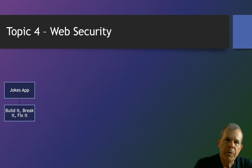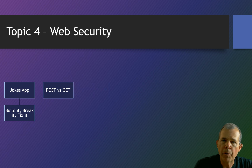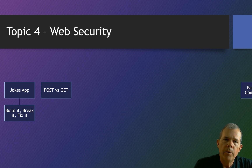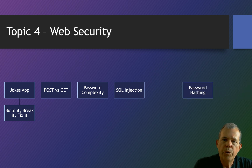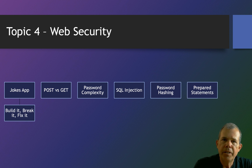In unit four, we're going to do a lot of programming. We'll build an app called the jokes app — a simple web app with a database. We'll build it, break it, and then fix it. We'll investigate the difference between a POST and a GET request and which one is secure, password complexity, SQL injection attacks and how to fix them in our code, password hashing, and prepared statements to make SQL injection more secure. Lastly, we'll talk about cross-site scripting, which has to do with JavaScript built into your input fields.